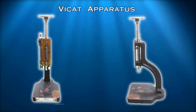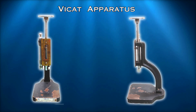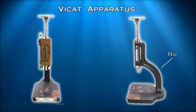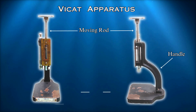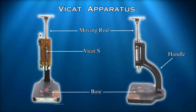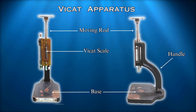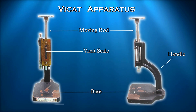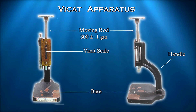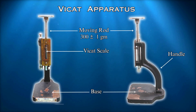The instrument used for this test is the VCAT apparatus, which includes components such as a handle, moving rod with a weight, a base, a VCAT scale, and a needle. This apparatus conforms to Indian Standard Code IS 5531, with a standard weight of the moving accessory being 300g plus or minus 1g.